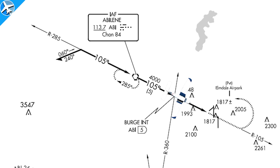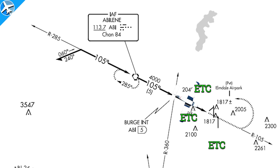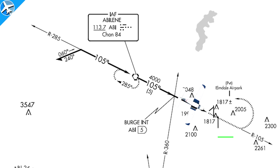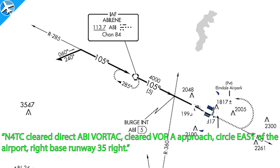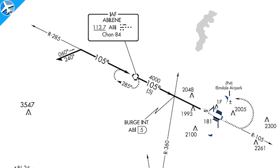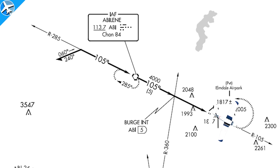ATC will specify where to circle with one of eight cardinal headings — north, northeast, east, southeast, etc. — where to enter in relation to the runway (downwind or base), and whether to use left or right turns while maneuvering. Here's that clearance: November 4 Tango Charlie, cleared direct Abilene Vortac, cleared VOR-alpha approach, circle east of the airport, right base, runway 35 right. [Readback:] Cleared direct Abilene Vortac, cleared VOR-alpha approach, circle east, enter right base, runway 35 right, for Tango Charlie.